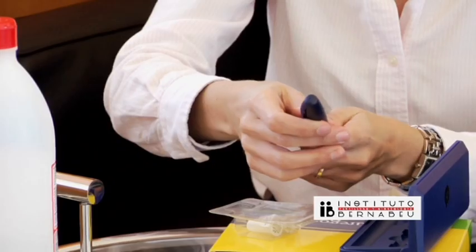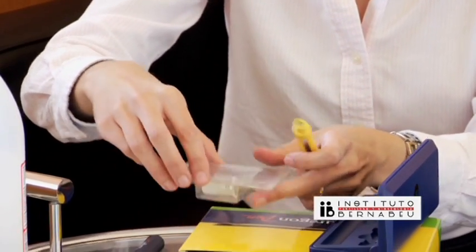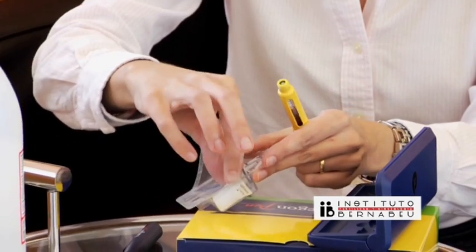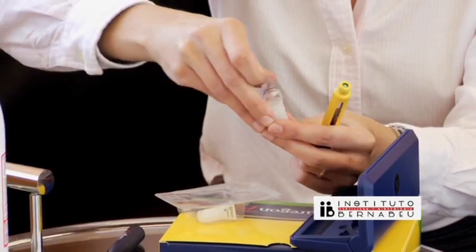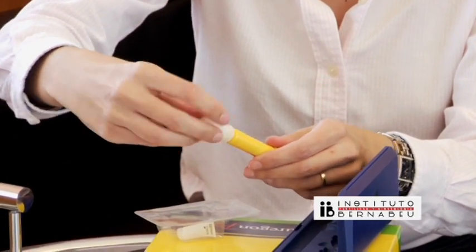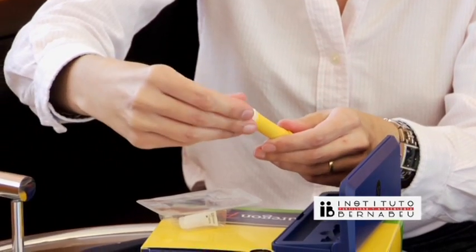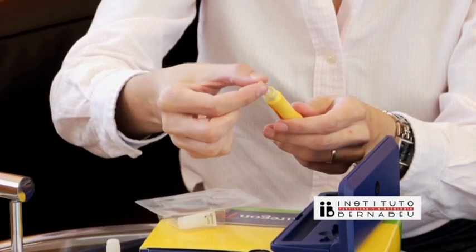The next step is to attach the needle, which is provided with the pen. You have to open the paper seal and screw the needle onto the pen. Then take off the cap and remove the protective sleeve.